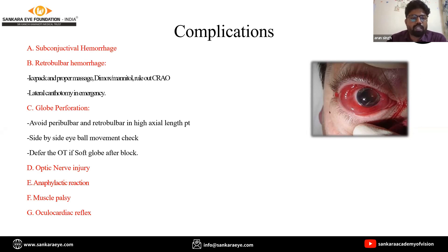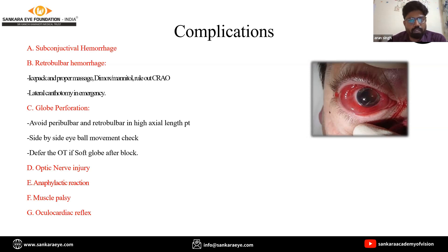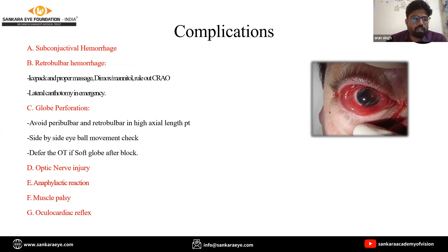There are also chances of globe perforation with peribulbar and retrobulbar anesthesia, especially in high myopic patients. We should always avoid such techniques in high myopes. We should always check side-to-side eye movement before pushing the block or injecting. We should always defer the operation if there is a very soft globe after the block, as there are chances of optic nerve injury.